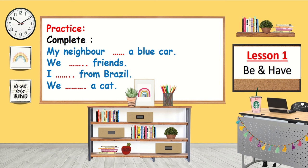Practice time! We will complete four sentences. First: 'My neighbor ___ a blue car.' Which verb will we use — 'be' or 'have'? Is it 'my neighbor has a blue car' or 'my neighbor is a blue car'? Of course, we say: my neighbor has a blue car.